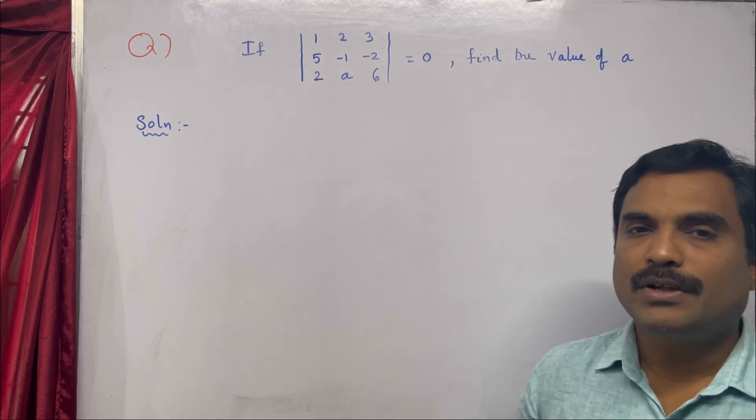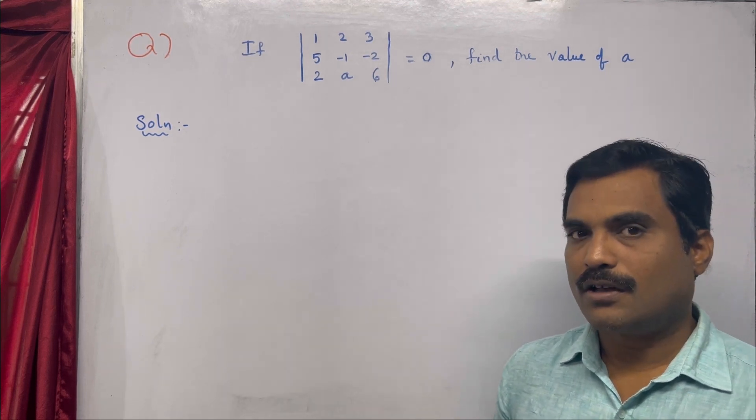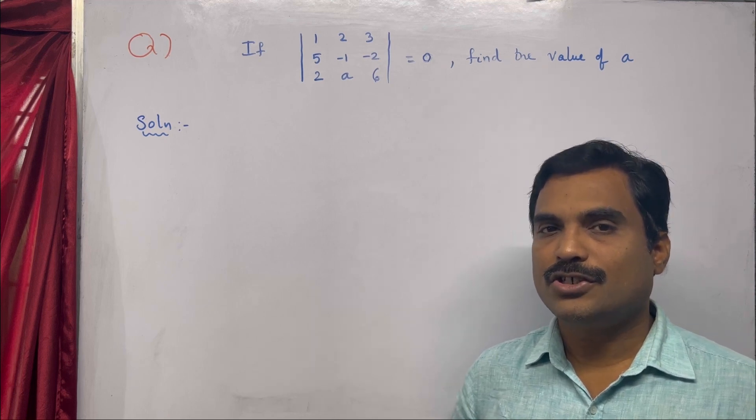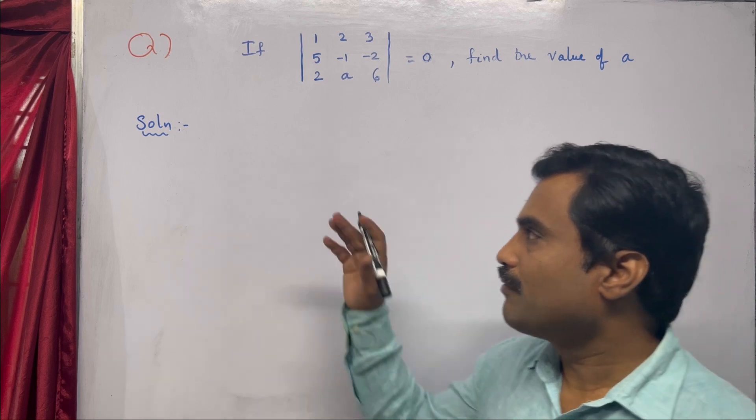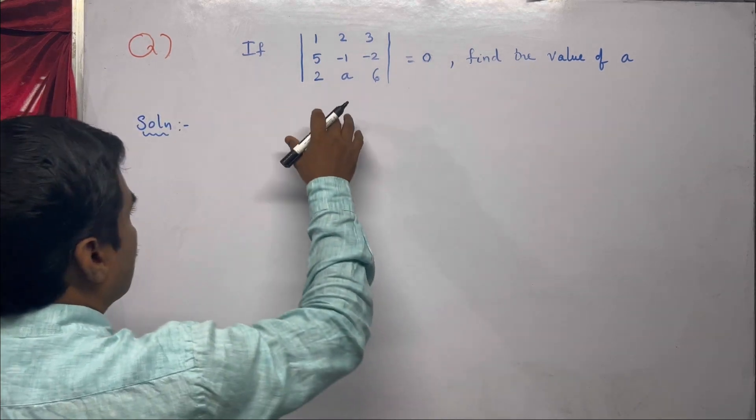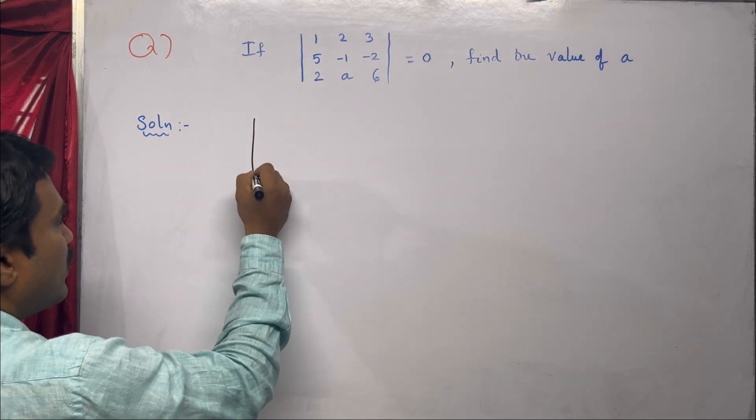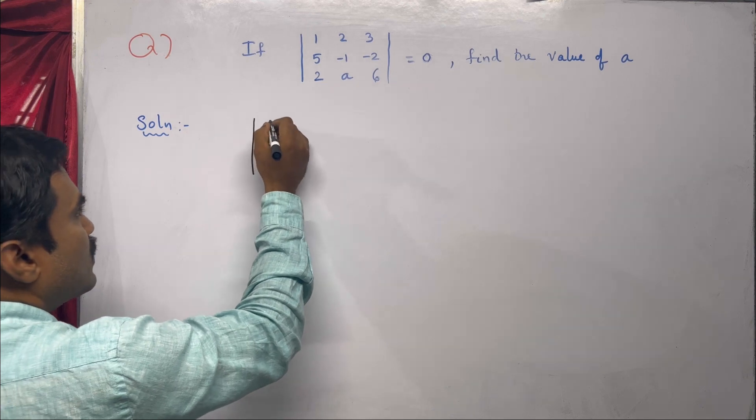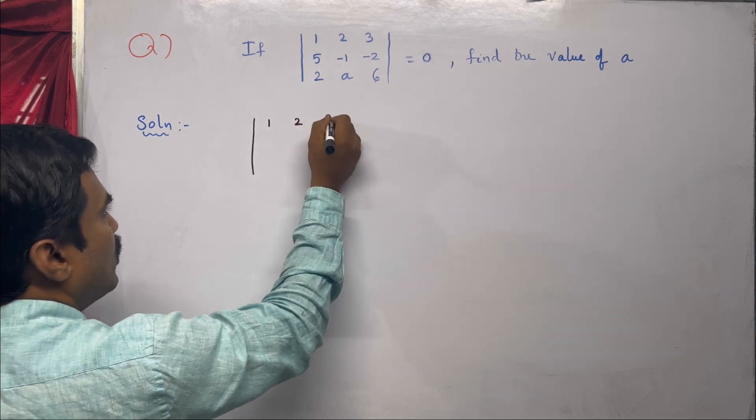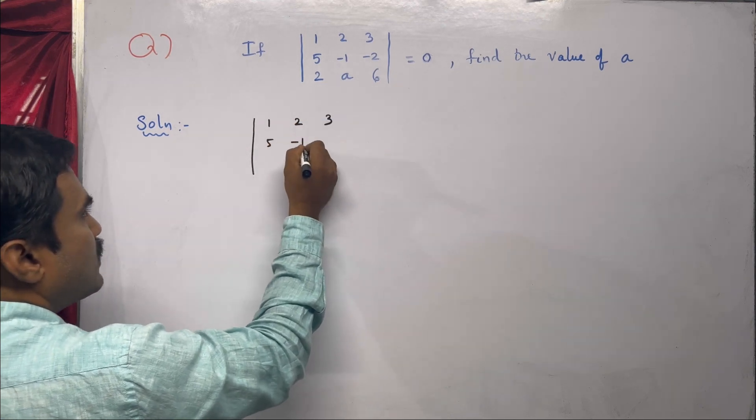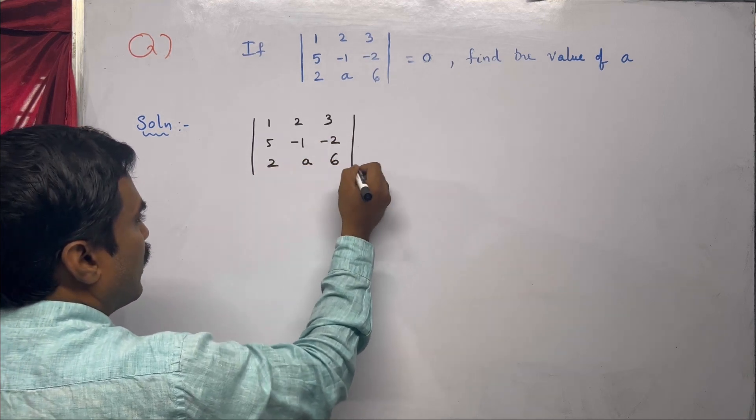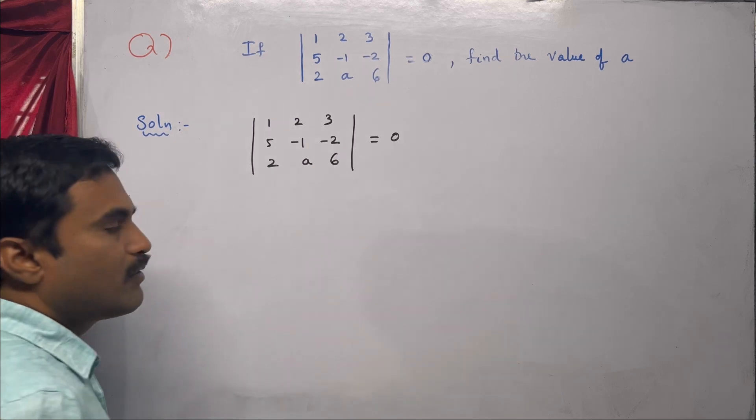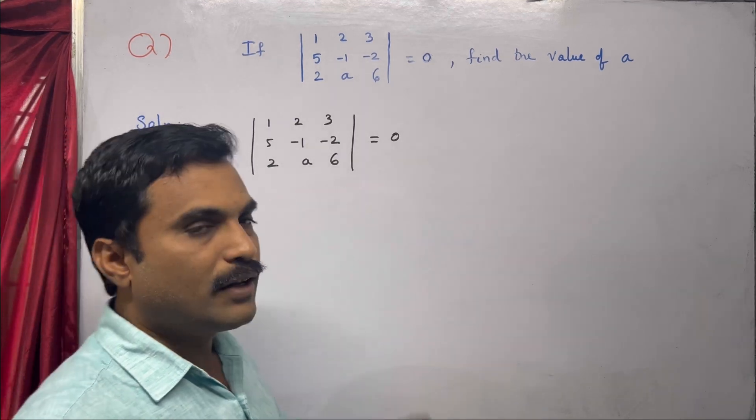The determinant of this 3x3 matrix is given as zero, and using this condition, we need to find the value of a. First, let's write the determinant again: 1, 2, 3; 5, -1, -2; 2, a, 6, which equals zero. Using this, we will find the value of a.